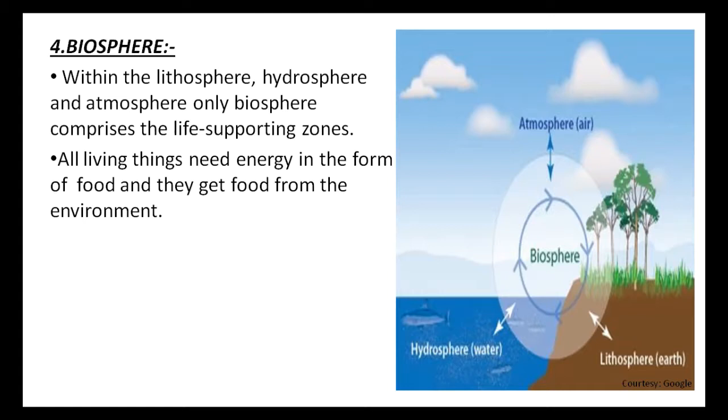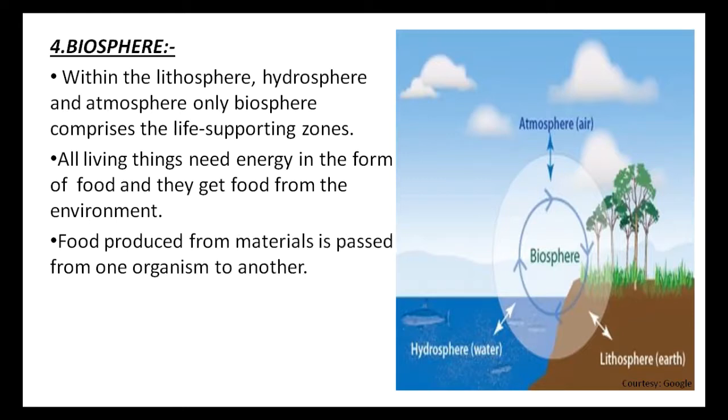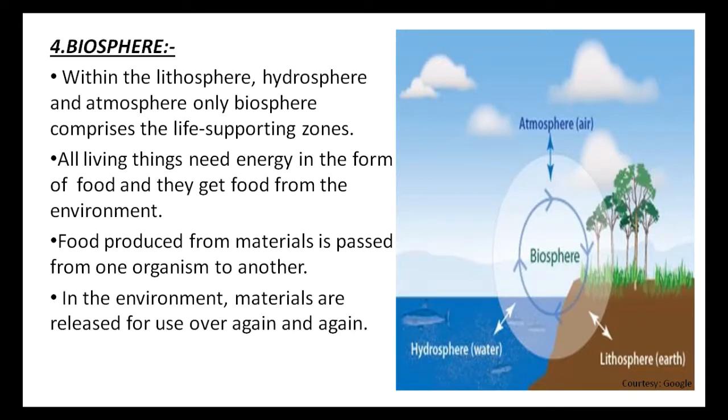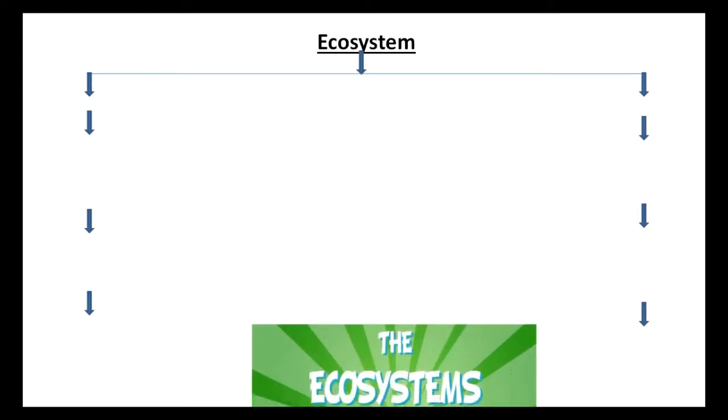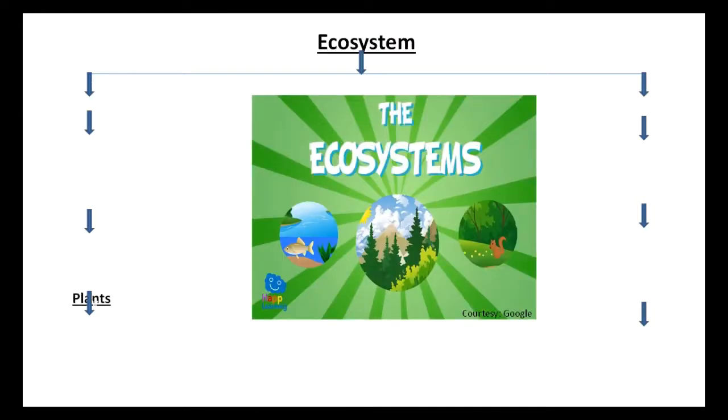Food produced from materials is passed from one organism to another in the environment. Materials are released for use over and over again. Such a life-supporting system is called an ecosystem. Ecosystem comprises of plants and animals.